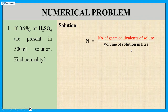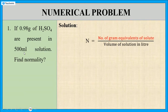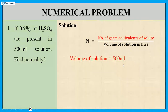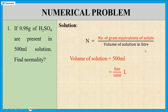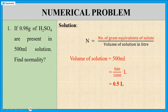In this problem, the volume of the solution is given — it is 500 ml. But we want the volume in litres, so we have to divide by 1000. That is 500 divided by 1000 litres, and the answer is 0.5 litres. Now we know the value of the volume of the solution in litres.